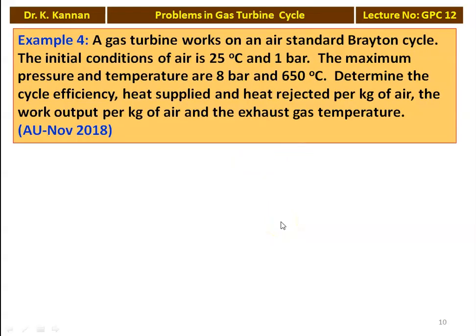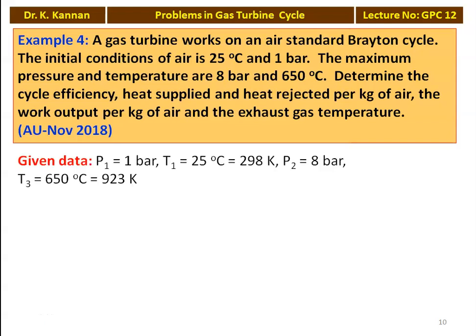Example 4 is from November 2018. A gas turbine works on air standard Brayton cycle. Initial conditions: 25°C and 1 bar. Maximum pressure and temperature are 8 bar and 650°C. Determine cycle efficiency, heat supplied, heat rejected per kg, work output, and exhaust gas temperature. Given: P1 = 1 bar, T1 = 25°C = 298 K, P2 = 8 bar, T3 = 650°C = 923 K. Pressure ratio Rp = 8/1 = 8. This problem is very similar to the previous one, except pressure P2 is now 8 bar instead of 3 bar.